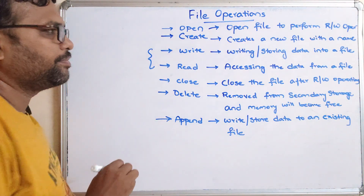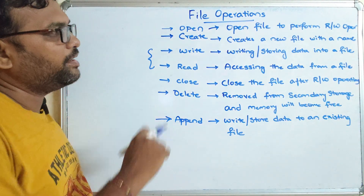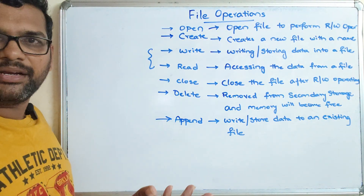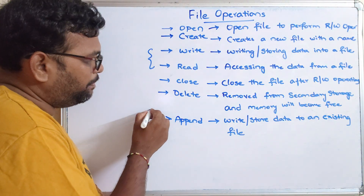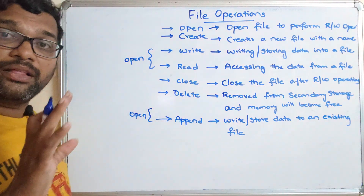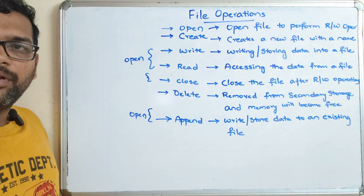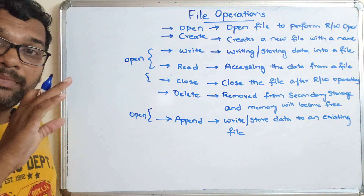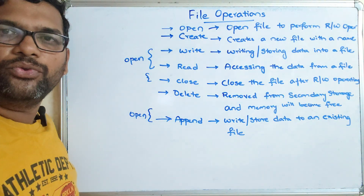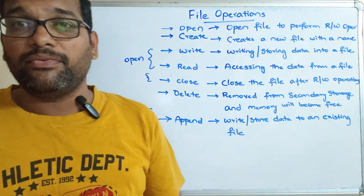For read, write, and append operations, the file must be opened first — the file should be available and accessed with its name. For create, there is no existing file; the file is generated during creation itself. Without opening the file, you cannot apply read, write, append, or even close operations. For delete, the file must be closed first and then only the delete operation can be done. Create means creating a new file.